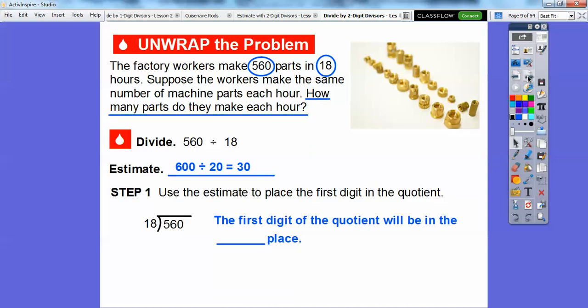We're going to use the estimate to place the first digit in the quotient. 30 is 3 tens. So that means the first digit in the quotient will be in the tens spot. We're going to put it right above this 6 right here. So here's 56 tens. When we divide, it's going to go right up above right there.